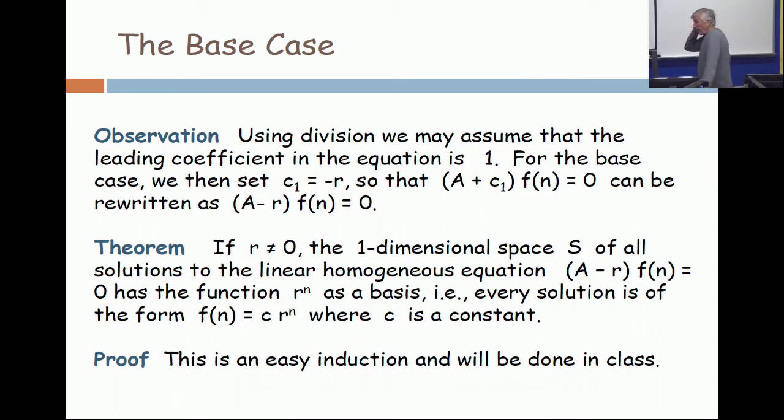Imagine an advancement operator polynomial of degree one. Now, as I said earlier, we're going to divide by C1. And so we're going to have just A plus some constant operating on the function Fn is zero. That's the equation.